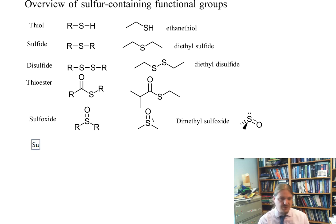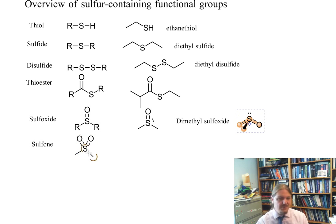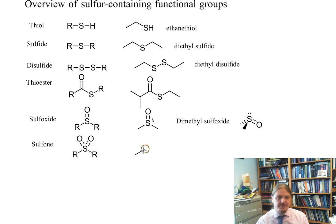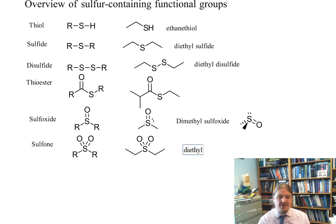Moving on to two oxygen atoms bonded to sulfur: the next kind of compound is a sulfone. The sulfur atom in a sulfone is kind of tetrahedrally arranged, even though it has multiple bonds to oxygen. Here's a specific sulfone — diethyl sulfone.